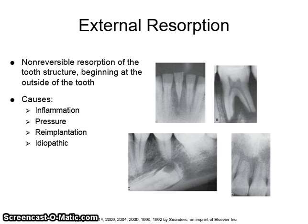External resorption is a non-reversible resorption of the tooth structure beginning at the outside of the tooth. It could be caused by inflammation, pressure, re-implantation of an avulsed tooth, or it could be idiopathic.